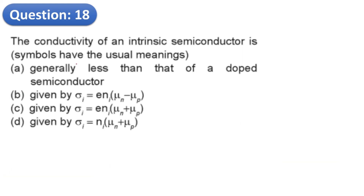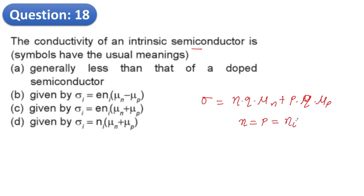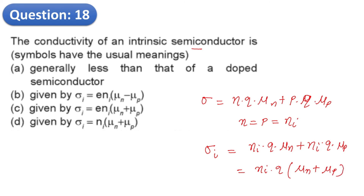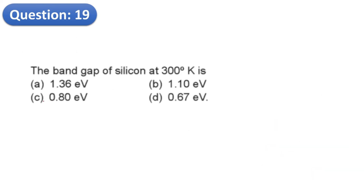Question 18: The conductivity of an intrinsic semiconductor. The general conductivity formula is sigma equals n·q·mu_n plus p·q·mu_p. For an intrinsic semiconductor, the number of holes equals the number of electrons equals ni. So sigma_i equals ni·q·(mu_n plus mu_p). The correct option is C.